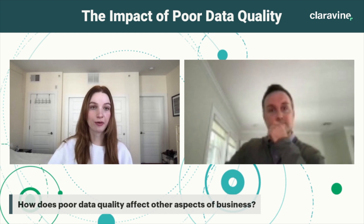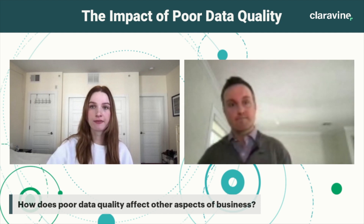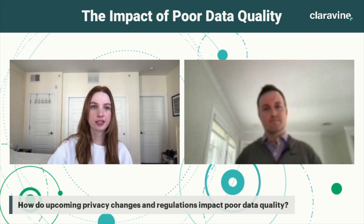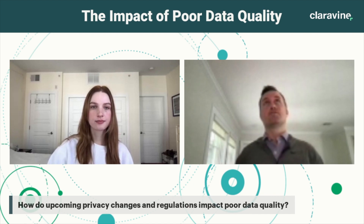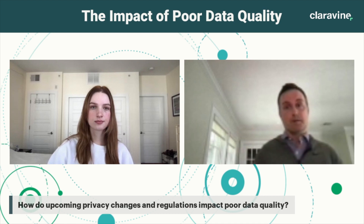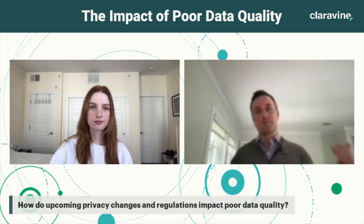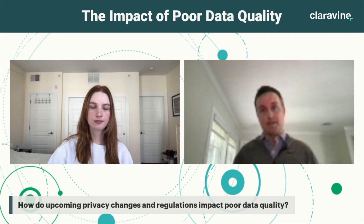It's definitely something all departments should keep in mind. A question many marketers may have: with the new privacy regulations from Google and Apple, what is their impact on poor data quality in the coming years? Just in the last week alone, there's been an iOS 15 update, Facebook has talked about embracing MMM, Google has pushed out new attribution modeling and metrics, all the changes with IDFA, and third-party cookie deprecation coming next year.